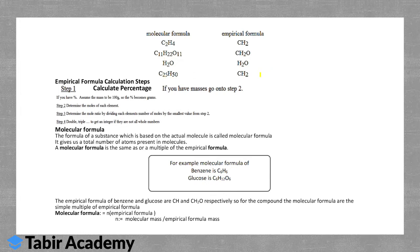The empirical formula and molecular formula may differ. To calculate the empirical formula: first, if you have percentages, assume the mass to be 100 grams so the percent becomes grams. Then determine the moles of each element. Determine the mole ratio by dividing each element's moles by the smallest value. If the results are not whole numbers, double or triple to get integers.